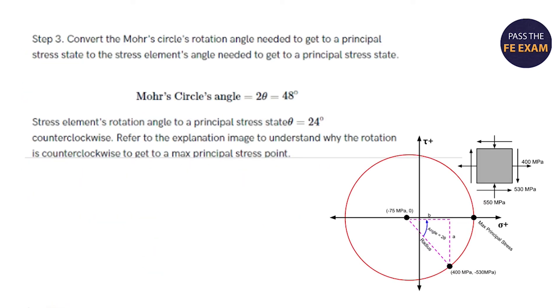Now for step three, you have to convert the Mohr's circle's rotation angle needed to get to a principal stress state to the stress element's angle needed to get to a principal stress state. And again, we know Mohr's circle's angle is 2θ, which we already calculated to be 48 degrees. So the stress element's rotation angle to a principal stress state is simply θ, which would be half of that, or 24 degrees counterclockwise. And you can refer to the explanation image here to understand why the rotation is counterclockwise to get to a max principal stress point.